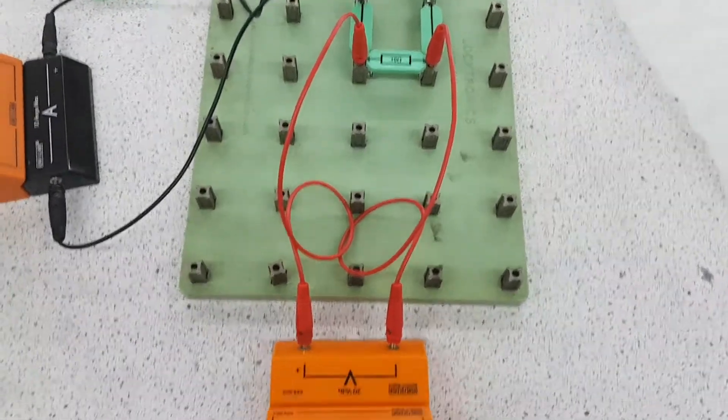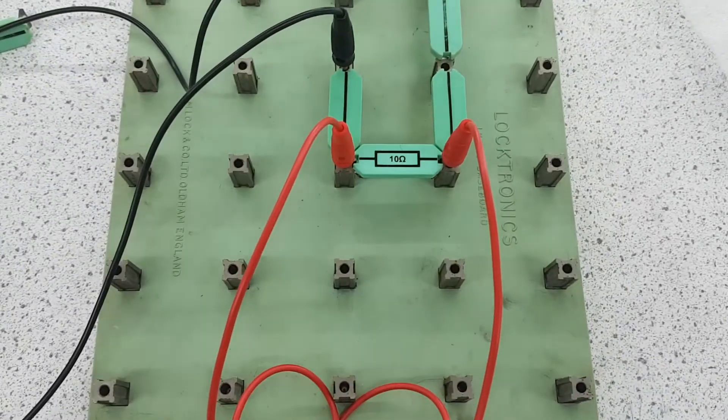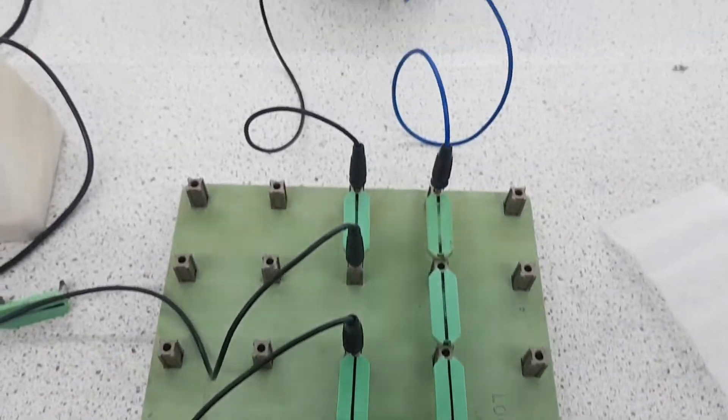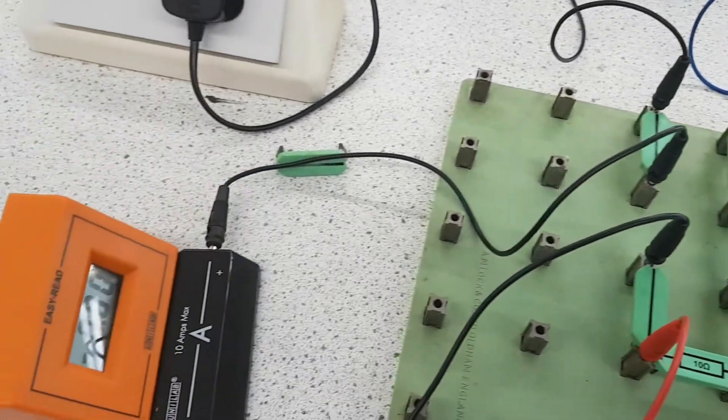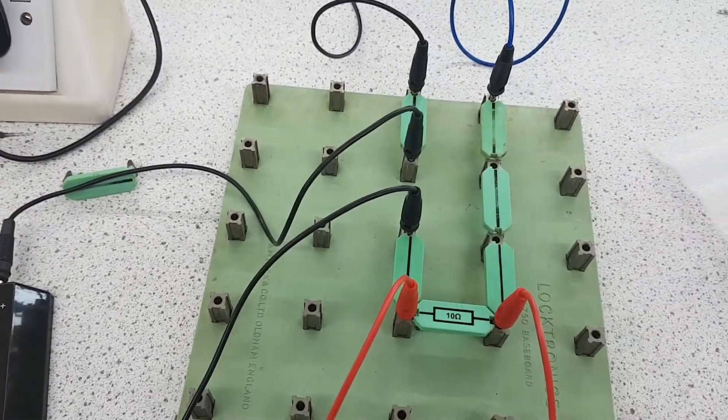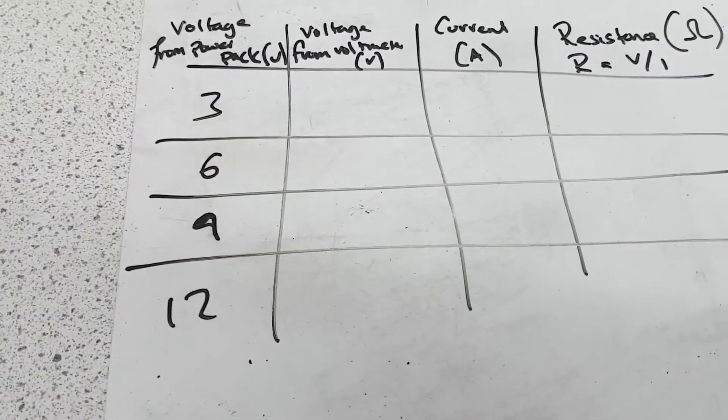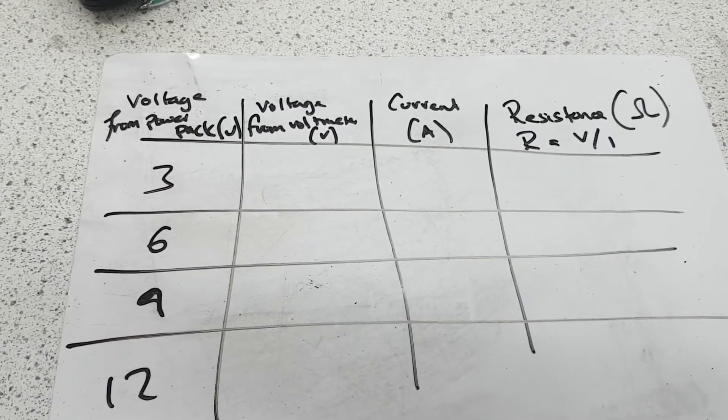And there we have it, our voltmeter has been placed in parallel to the fixed resistor. There is our power pack, our ammeter is in series, happy days. We are now on the way to carrying out our investigation.